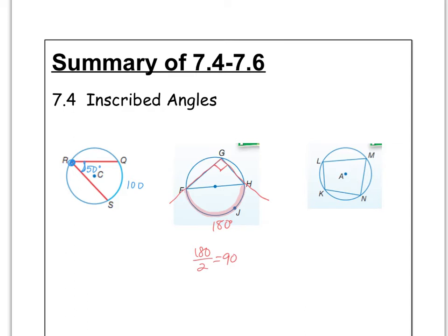And then the third thing we learned in section 7.4 was that if you have a quadrilateral inscribed in a circle, like this third picture here, opposite angles are supplementary. A lot of people think they're going to be equal but they're not. They add up to 180. So for instance, if angle K is 100 degrees, then angle A is 80 degrees. They are supplementary.